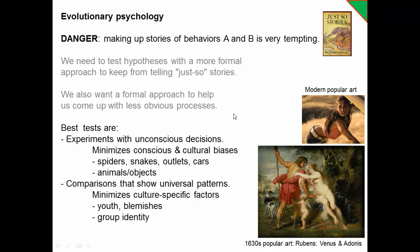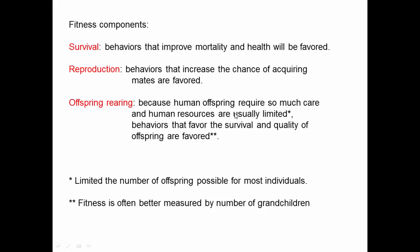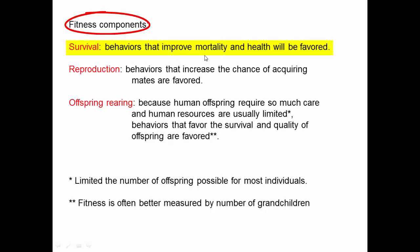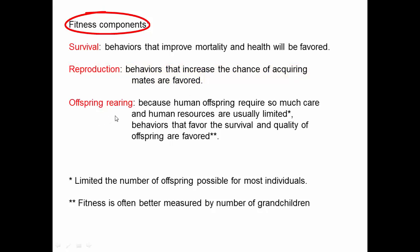Now we'll look at evolutionary psychology in more detail. If we're going to think about fitness for humans, we want to think about fitness components: survival, reproduction, and offspring rearing. Survival and reproduction are just like with other organisms — behaviors that improve mortality and health will be favored, and behaviors that increase the chance of acquiring mates are favored.